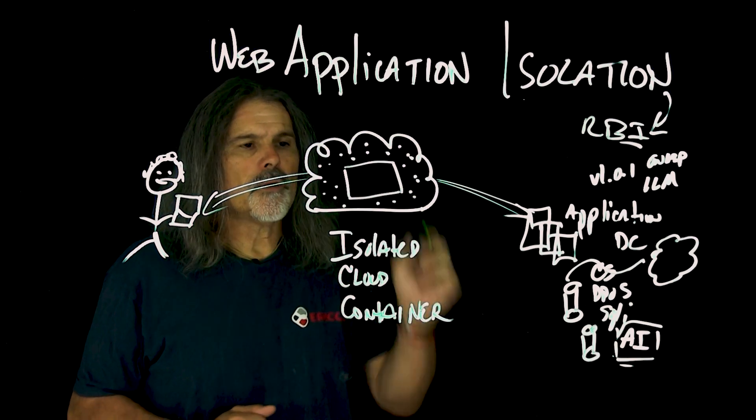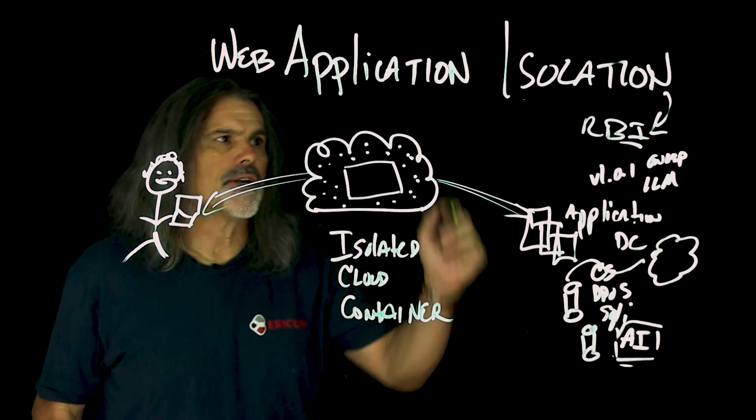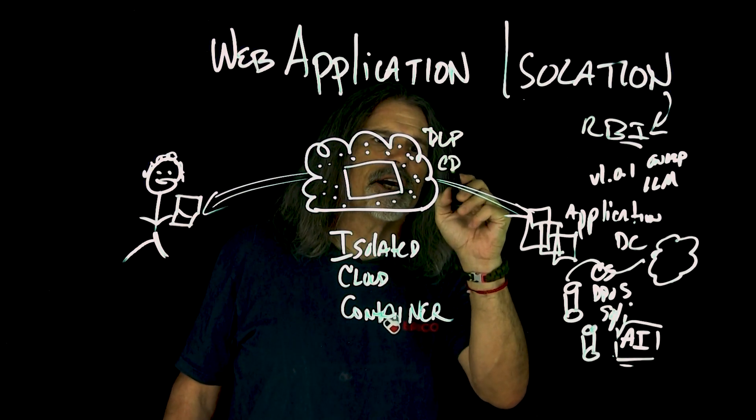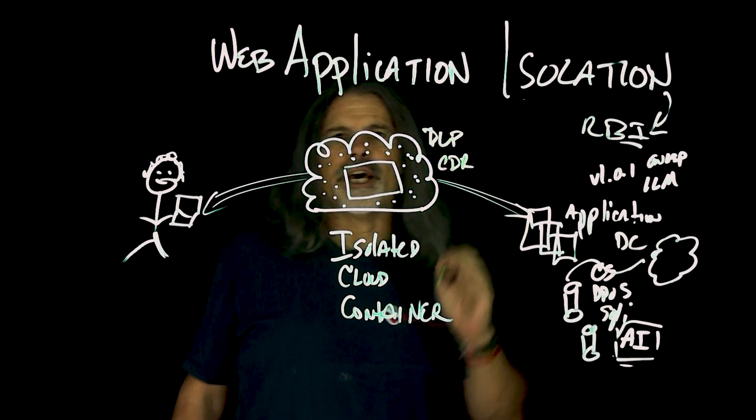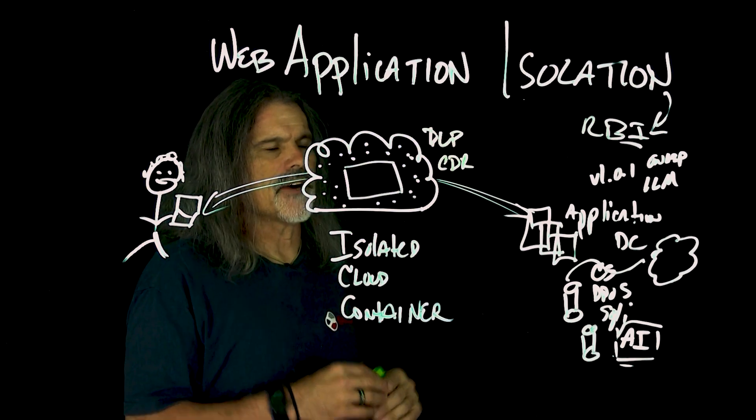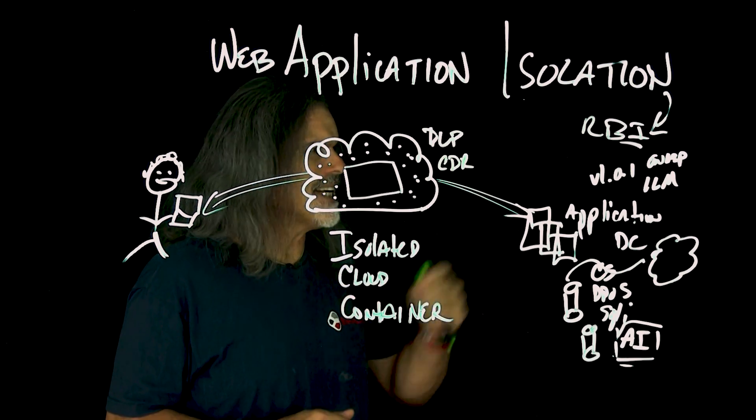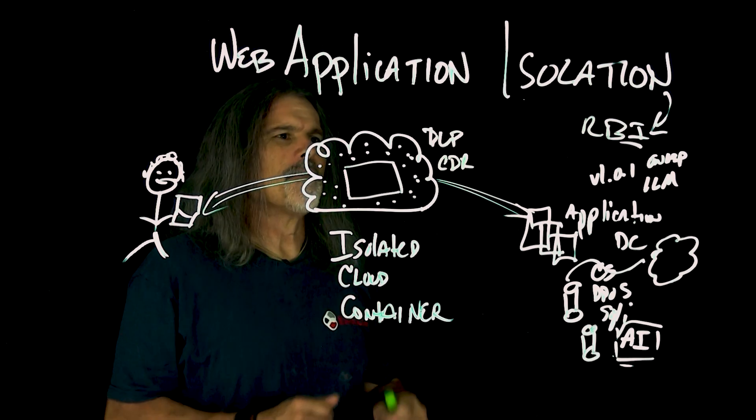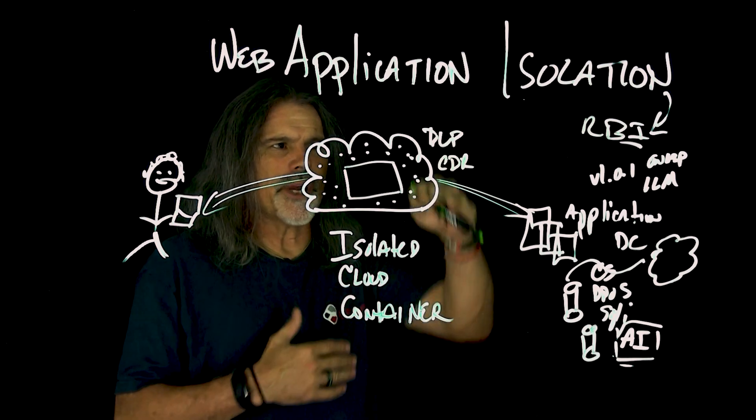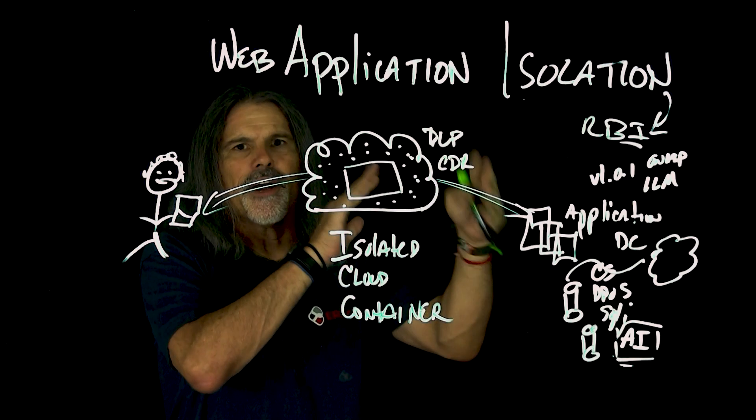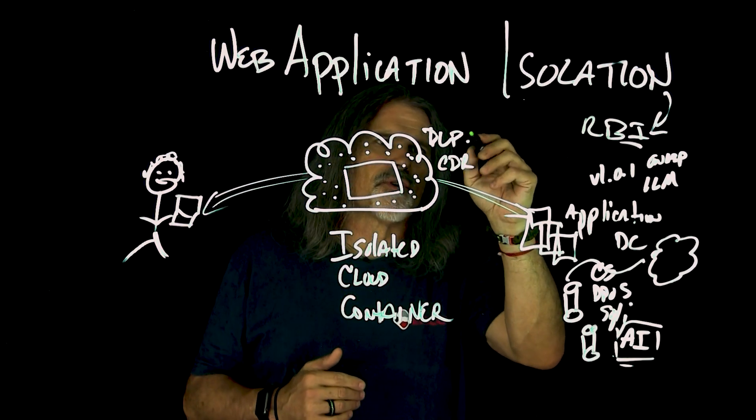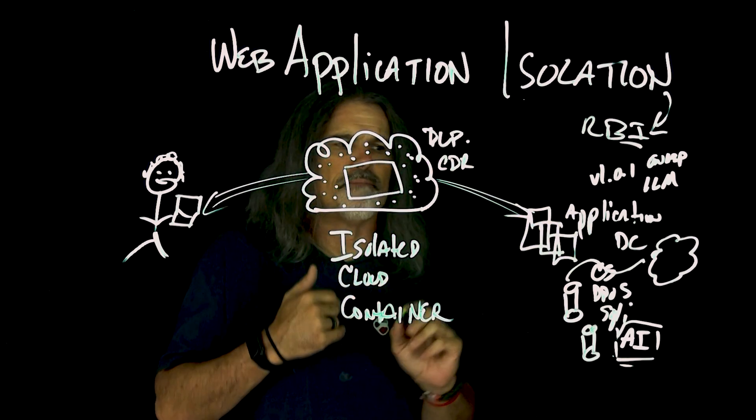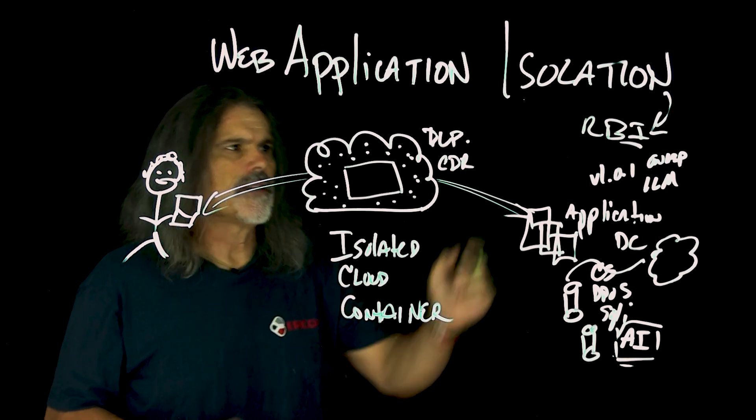You have a lot of control here within the cloud container. You can do things like data loss prevention. You can do the CDR stuff, which is file sanitization where it'll break it down and reconstruct the file to make sure there's no nasties in there. You can control uploads and downloads by file type, by name, by contents, things like that.